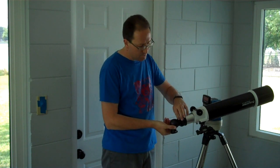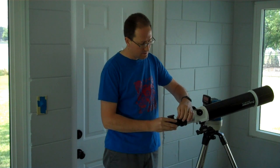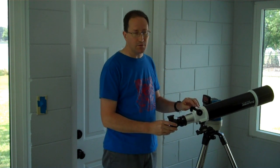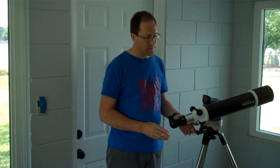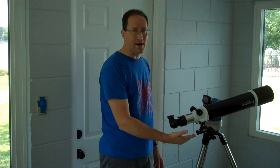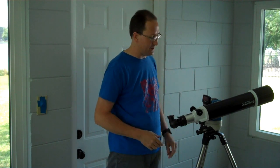This actually isn't as big of a problem as you might think because the star diagonal can rotate and I don't mind using the focusing knobs up on the top instead of the bottom. The only real problem is that the finder scope is way down here so I really have to get down if I'm looking through the finder scope especially as I get closer to the zenith.